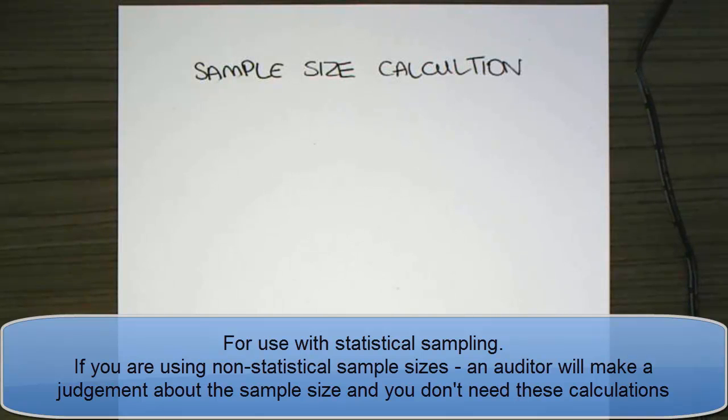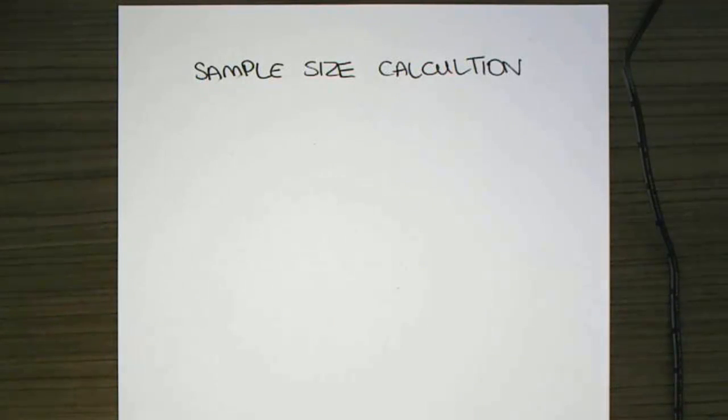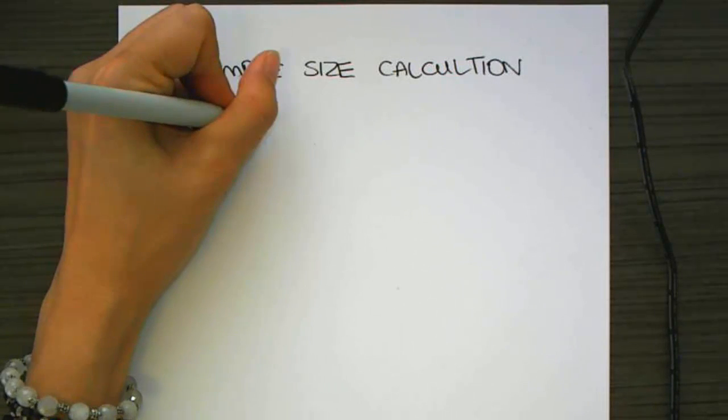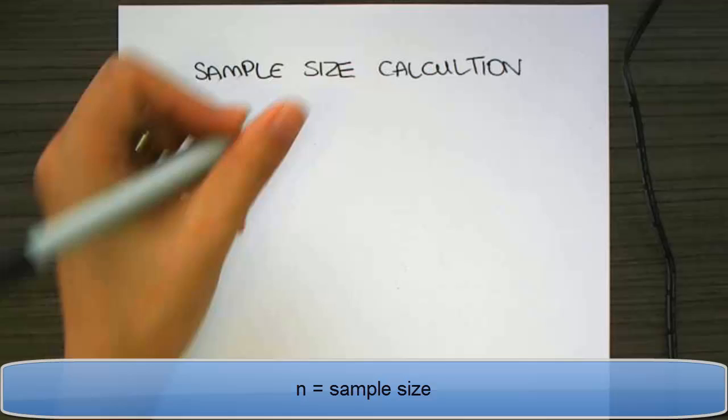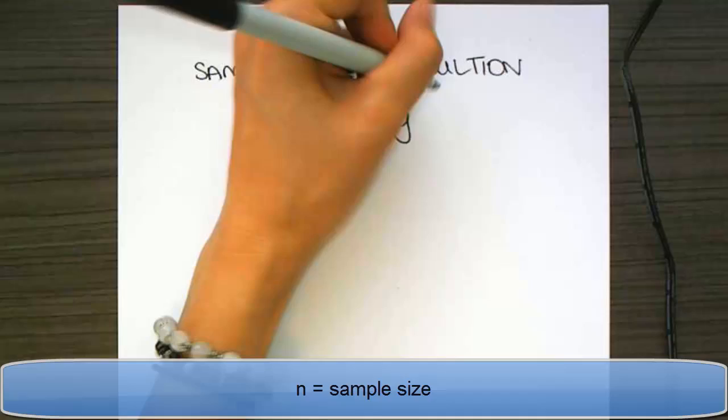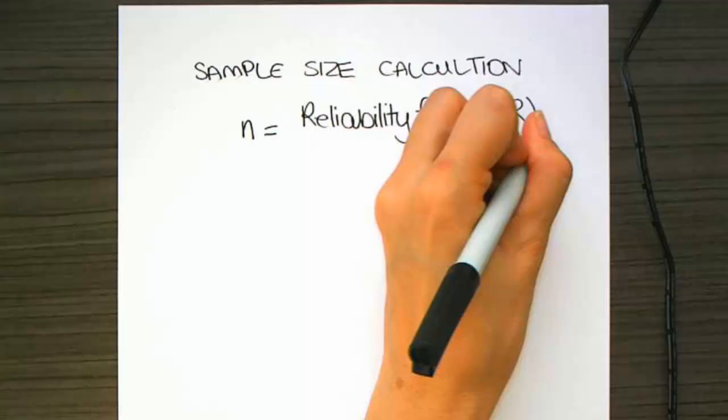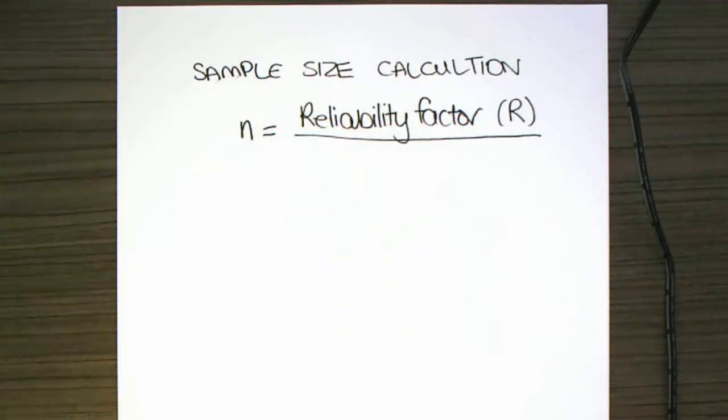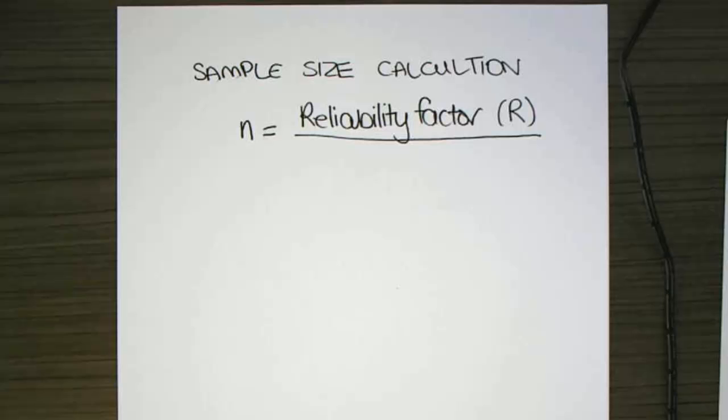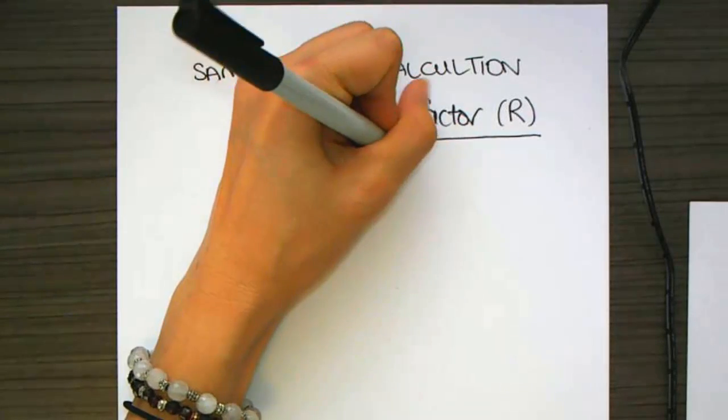So we use one formula that is customized firstly for control testing and then for substantive testing. That formula is n, which is our sample size, divided by our reliability factor, which we call R, divided by some sort of rate of misstatement. So we have a rate of deviation or misstatement.